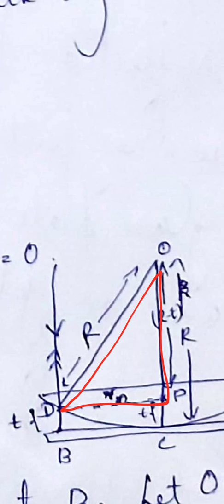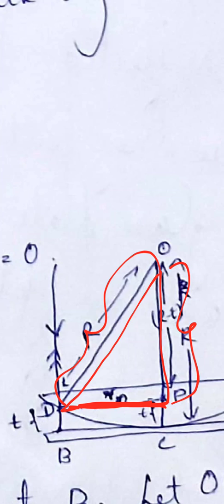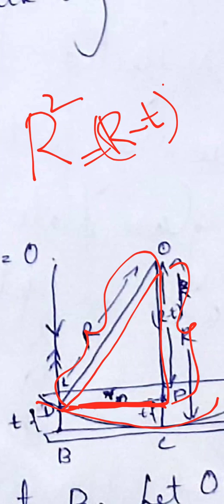The distance DB equals t, and PC also equals t, so OP becomes equal to R minus t. Since ODP is a right-angle triangle, we apply Pythagoras theorem: R² = (R − t)² + rₙ², where rₙ is the radius of the nth dark ring and R is the radius of curvature of the plano-convex lens.